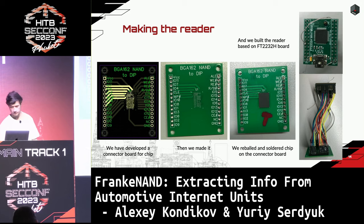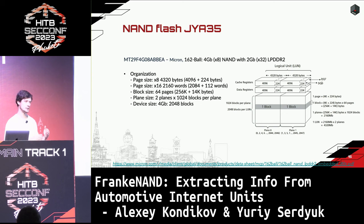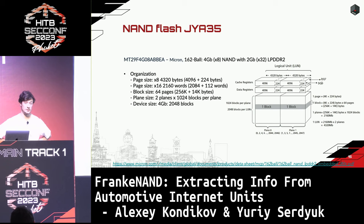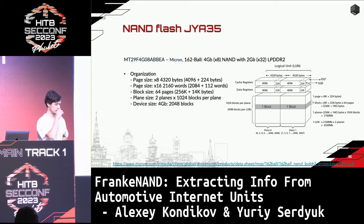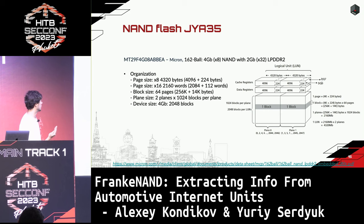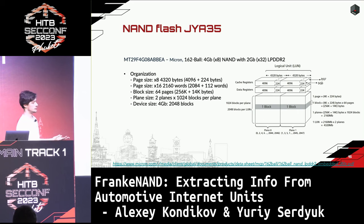Now let's see what's inside the chip and how the memory is organized. Memory is separated into pages. Each page consists of 4,320 bytes: 4,096 bytes of main memory and 224 bytes of so-called out-of-band memory, which is quite unusual for NAND chips. Memory is then organized into blocks — each block consists of 64 pages, and there are two planes of 1,024 blocks each.